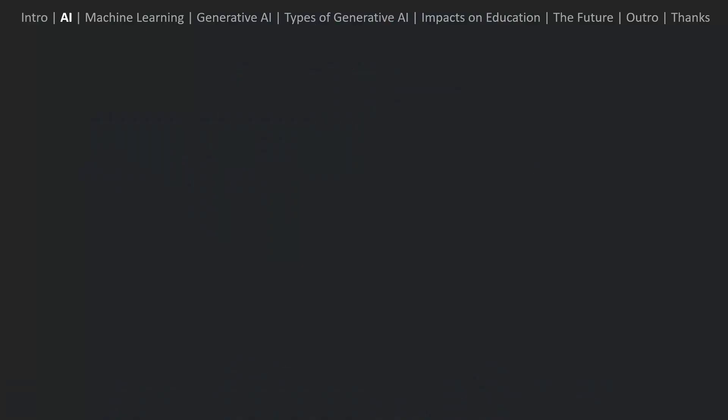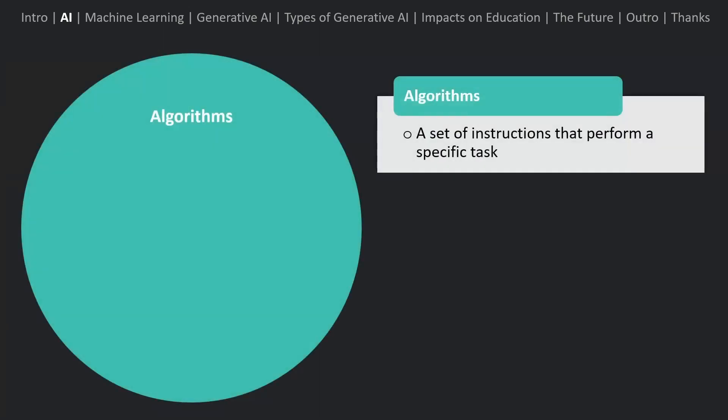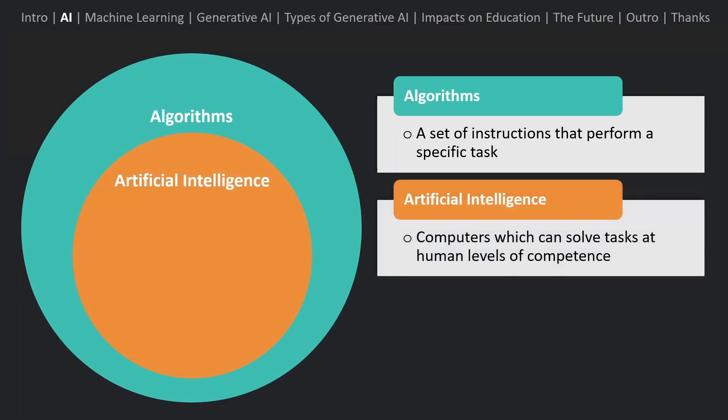Before we talk about generative AI, let's first clarify what we mean by AI. At the broadest level, we have algorithms. Algorithms are a set of instructions which can be used to perform a specific task. You can think of a recipe to bake a cake as an algorithm, though most commonly we think of algorithms as the code we write to give instructions to a computer. Artificial intelligence, or AI for short, is a computer algorithm which can perform tasks which would normally require human intelligence to solve.